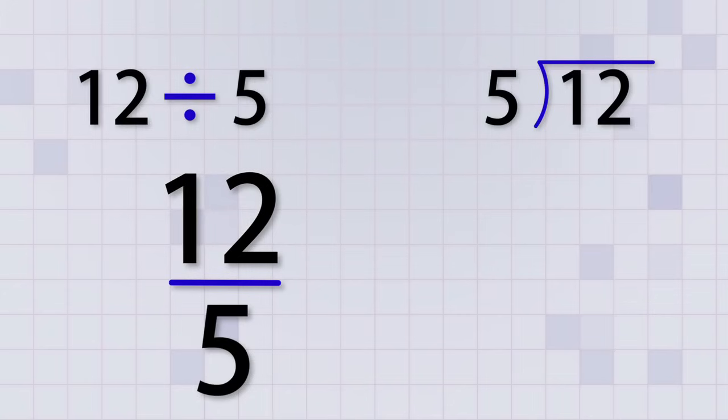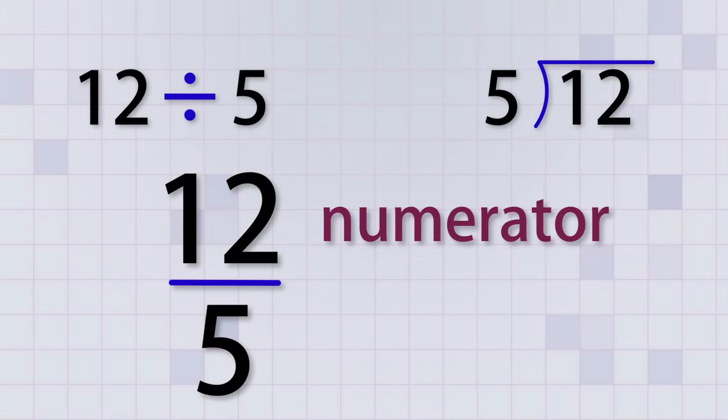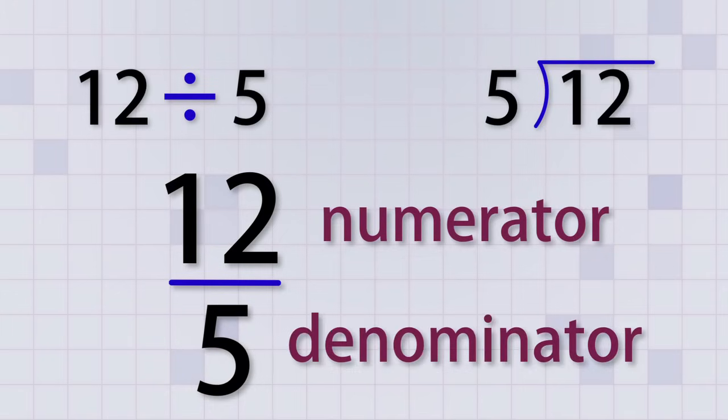The line between the top and bottom numbers is just another way of writing the division symbol. The top number is the number being divided up and we call it the numerator. The bottom number is the number we're dividing by and we call it the denominator. Now let's look at some of the common fractions that you're already familiar with and think of them as division problems.